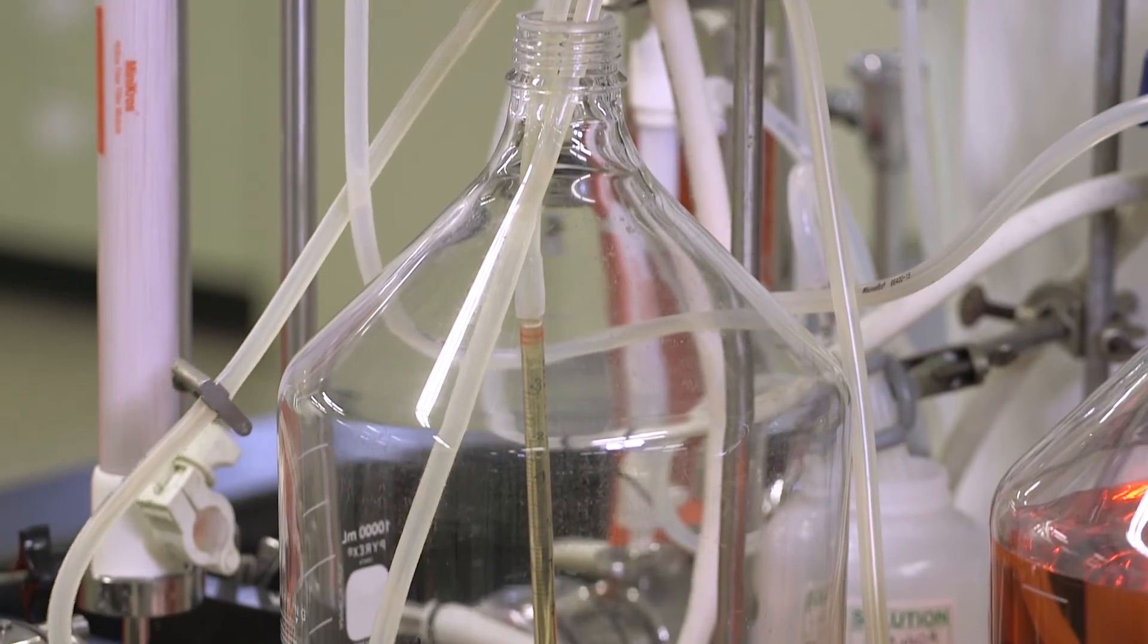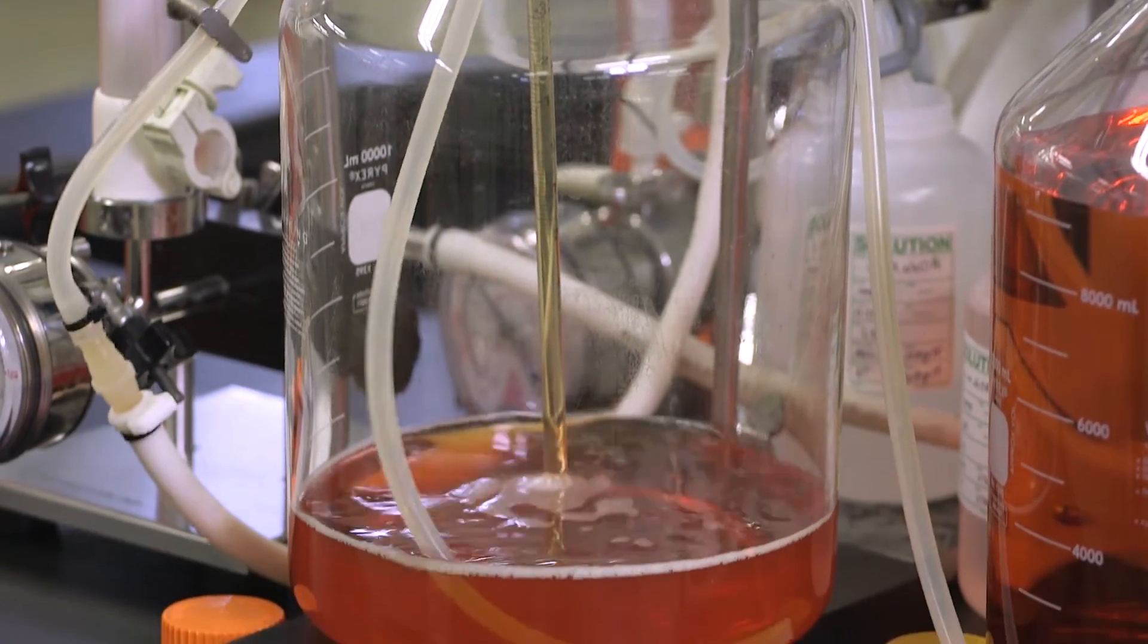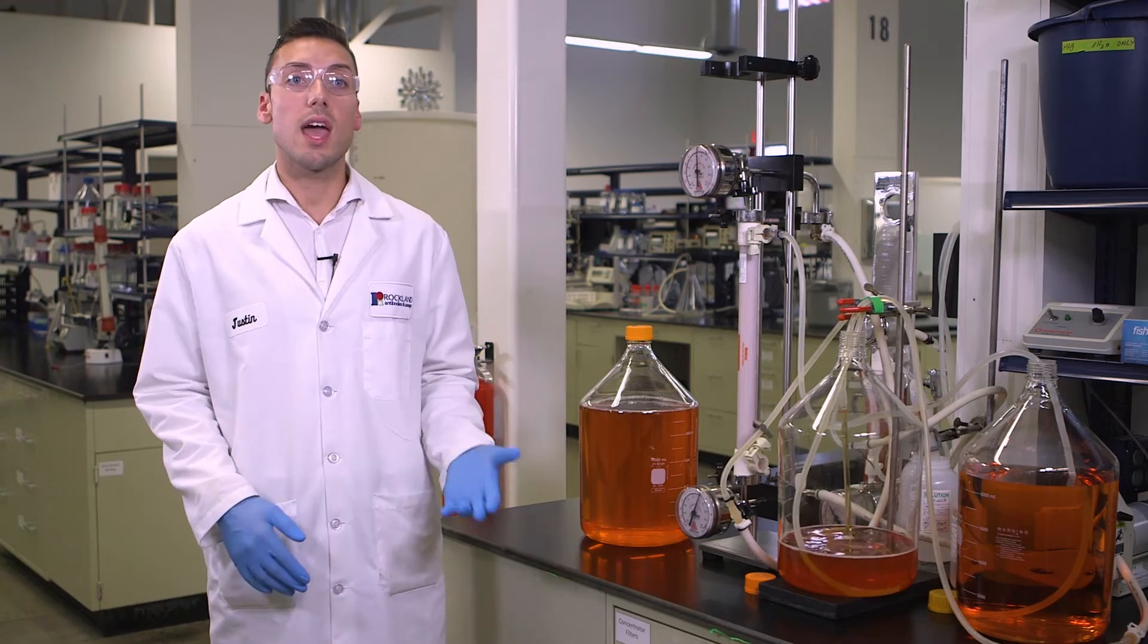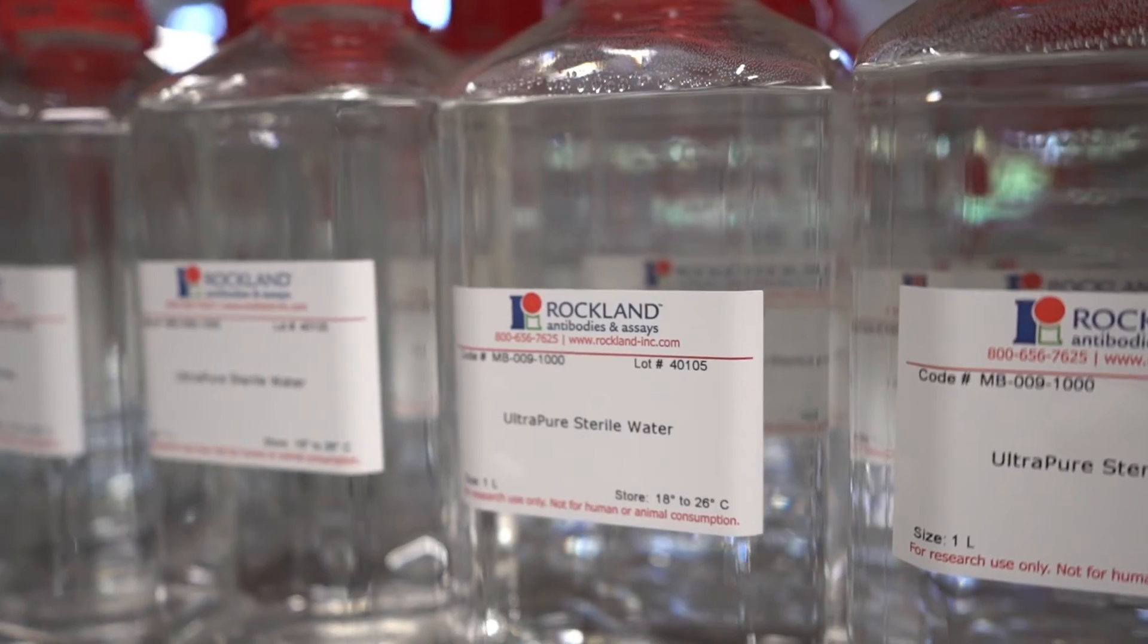We often check the efficiency of our column capillaries by running a BSA check on them to make sure we're not depleting any antibody protein when we're doing our production runs.